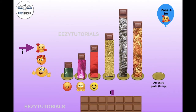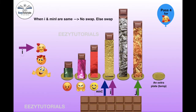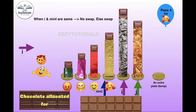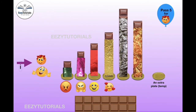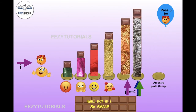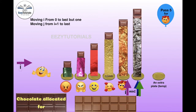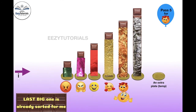Pass 4. The minimum index is not moved at all, so a swap is not needed. The fourth chocolate is allotted for the fourth girl. Pass 5. The fifth smallest chocolate is allocated for the fifth girl, and automatically the biggest chocolate is placed in the last plate.